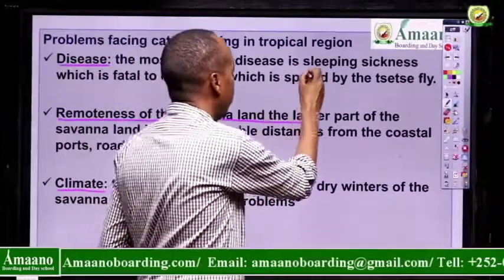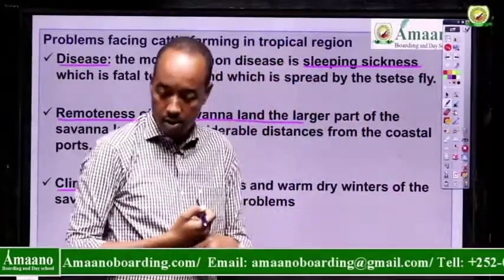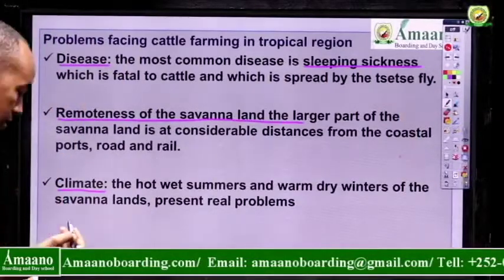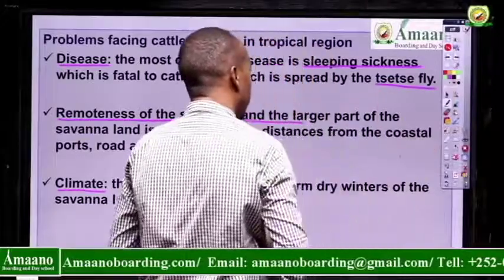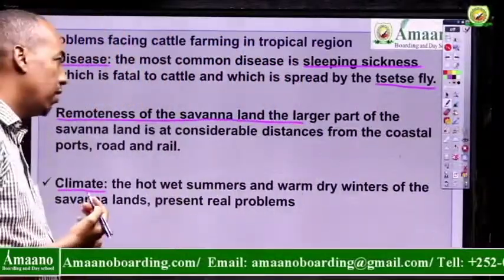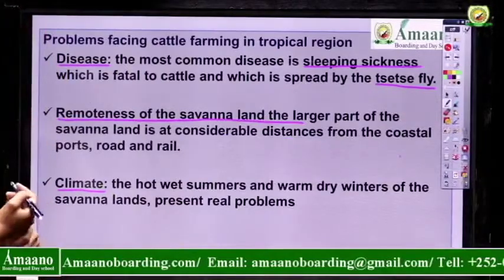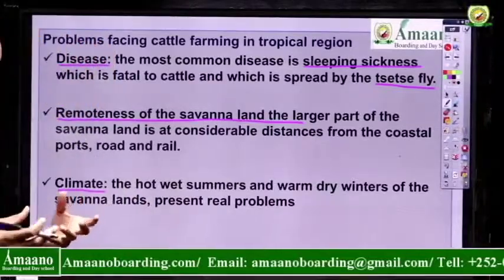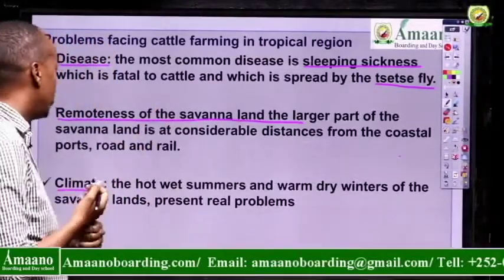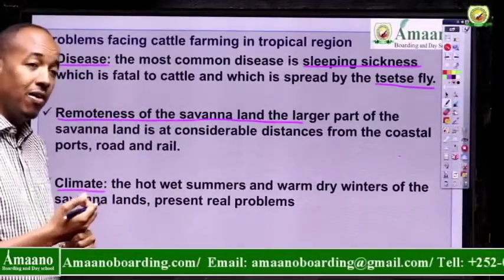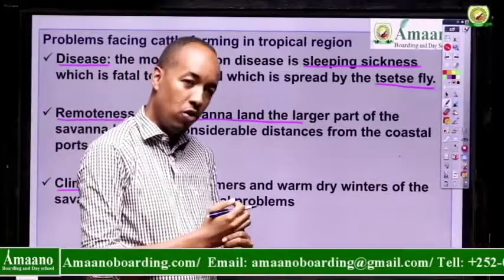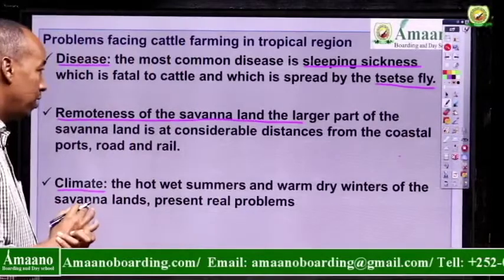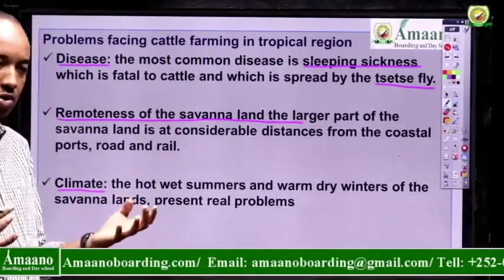Regarding diseases, sleeping sickness is a common one. The insect that causes sleeping sickness is called the tsetse fly. It can cause serious problems to the cattle and can even kill them. This fly also hides in the grassland and bites. Regarding remoteness, the savanna land is far from the cattle, and there are no good roads and transportation. For that reason, cattle have to walk miles to and from, using their energy and losing weight.